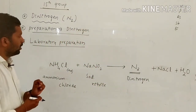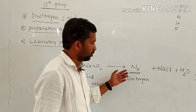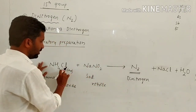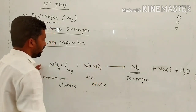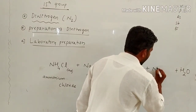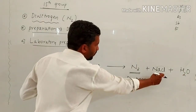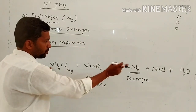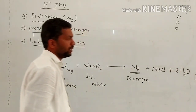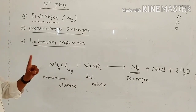When aqueous ammonium chloride is combined with sodium nitrite, it gives di-nitrogen. Balancing is very important for inorganic elements. Cl1 balances to Cl1, Na1 balances to Na1. This is the balanced reaction — the first preparation, the laboratory preparation of di-nitrogen.